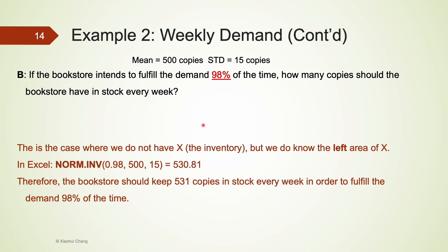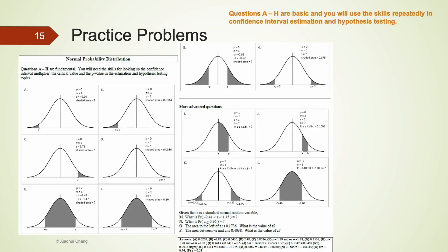For part B, we want to fulfill demand 98 percent of the time. We know the area to the left of x is 98 percent but don't know x, so we use NORM.INV. The first argument is 0.98, followed by the mean and standard deviation. Excel returns 530.81, so the bookstore should keep 531 copies in stock each week to fulfill demand 98 percent of the time. Practice with the exercise problems posted on the course site to reinforce these skills.